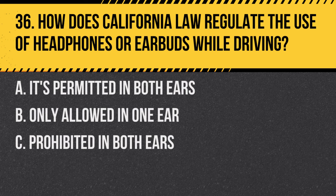Question 36. How does California law regulate the use of headphones or earbuds while driving? A. It's permitted in both ears. B. Only allowed in one ear. C. Prohibited in both ears. Answer: B. Only allowed in one ear. It's legal to use a headphone or earbud in one ear for communication, but not in both ears.